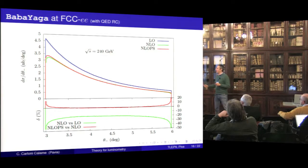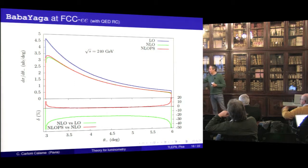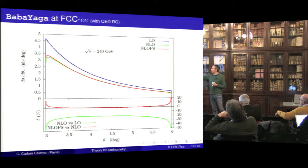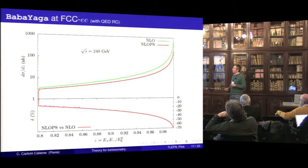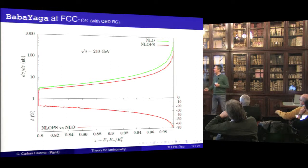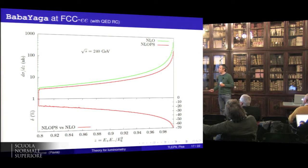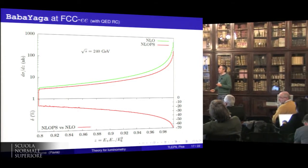Here I show the effect on some distributions of the various radiative corrections. This is the polar angle of the electron as obtained with the lowest-order calculation, with the NLO in red, and with higher orders added in green. The NLO corrections are quite large and the higher-order corrections, for example at the edge of the distribution, can be sizable at the level of 10 or 20 percent. This other distribution is more dramatically affected by multiple photon emissions — it shows the energy loss from radiation, and the effect of multi-photon emission can be at the level of 60–70 percent in the soft region.